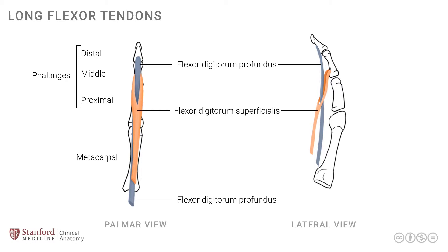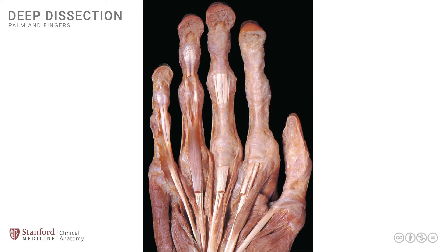Another point to note is that the metacarpophalangeal joint and the proximal interphalangeal joint are flexed by both of these tendons, because both tendons cross these joints. The distal interphalangeal joint, however, only has the flexor digitorum profundus tendon in relationship, and is therefore flexed only by the FDP tendon.